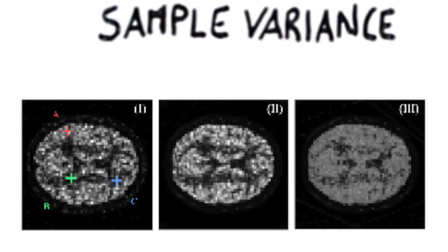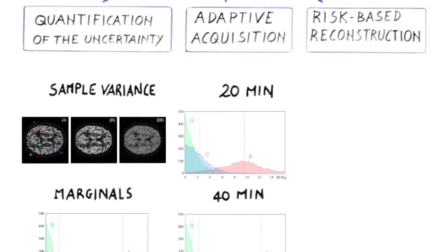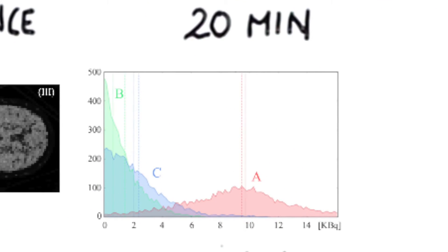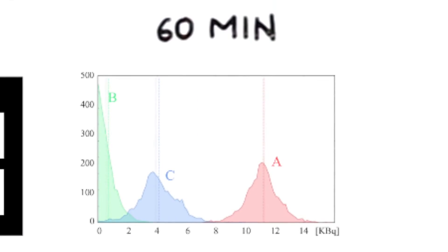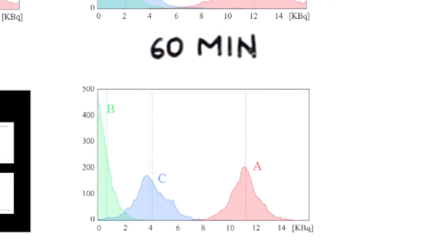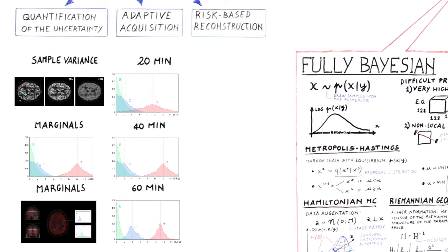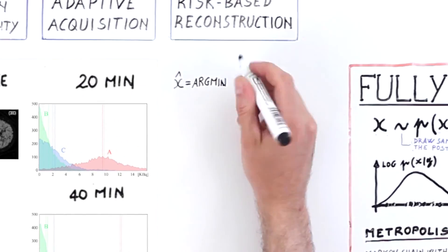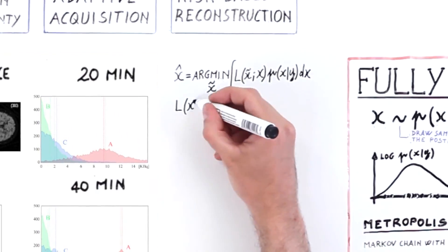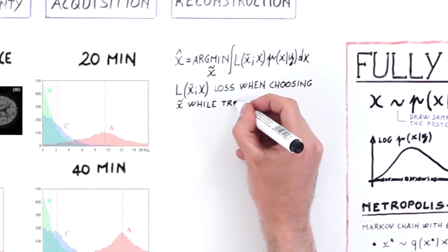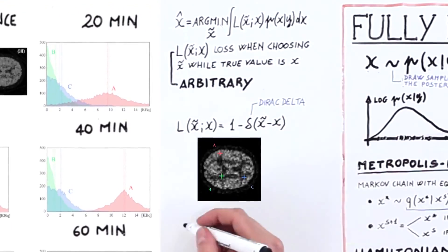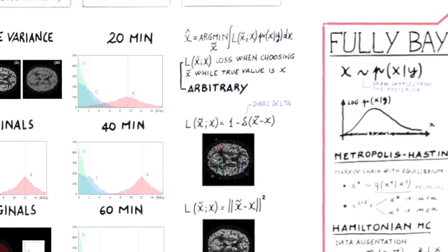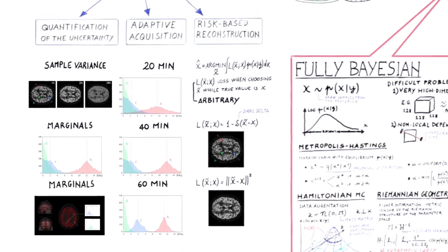Take note of the voxel locations A, B, and C, colored in red, green, and blue. The plots that follow display the histograms of the posterior samples for voxels A, B, and C for 20, 40, and 60 minutes of acquisition. The method allows one to capture the increase of information obtained by increasing the scanning time. The posterior sampling approach via Markov chain Monte Carlo enables approximation of the integral over the posterior distribution as a finite sum over the samples, allowing the definition of arbitrary risk criteria.